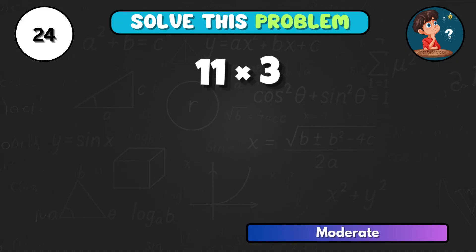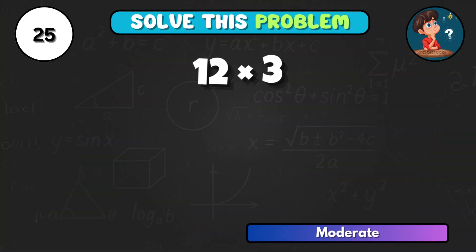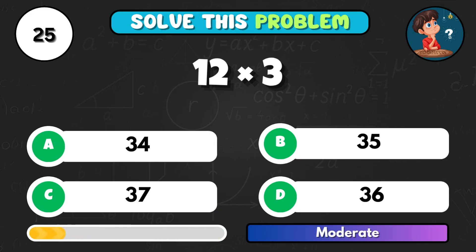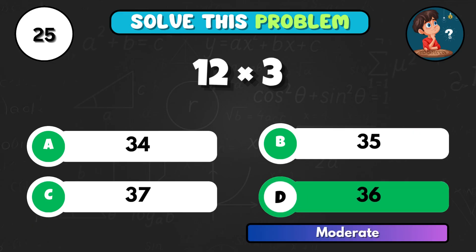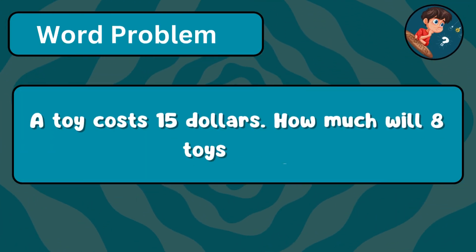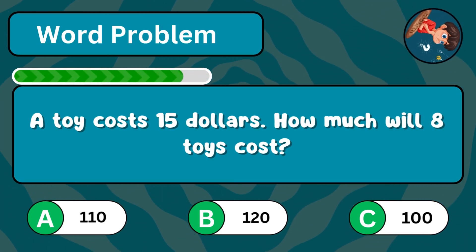11 multiplied by 3, what's the result? That's B, giving 33. And 12 times 3, what does that make? Option D, the answer is 36. A toy costs $15, if you buy 8 toys, how much will they cost altogether?